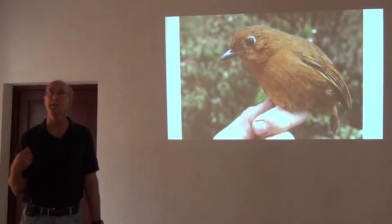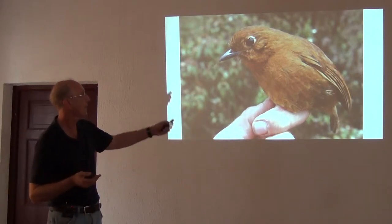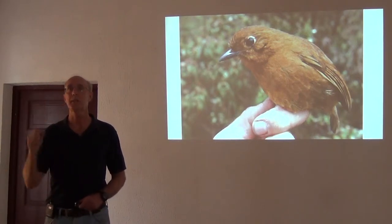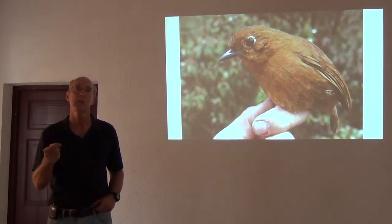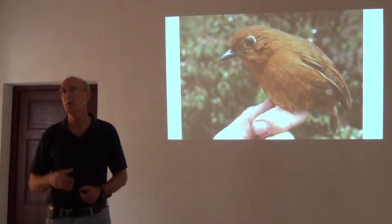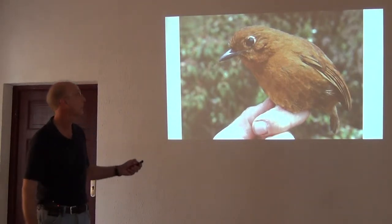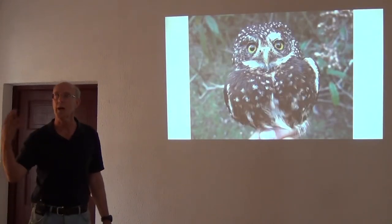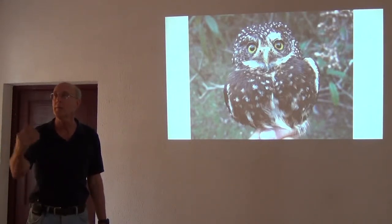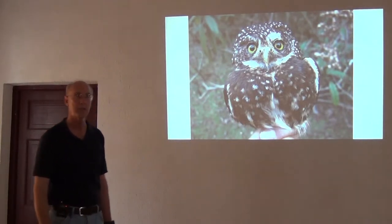These vocalizations often give you an indication that there might be more than one species in a complex. This is an ant pitta found throughout the Andes of South America — not too long ago it was considered a single species. We started learning the vocalizations and realized they differ from site to site; now there may be as many as 22 species recognized in something once considered a single species. The vocalizations helped drive that realization, and genetic data later confirmed we're talking about multiple species instead of a wide-ranging single species.